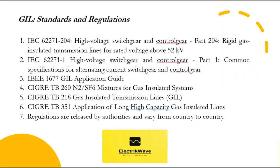The various standards and references followed for GIL include: IEC 62271-204 — High voltage switchgear and controlgear Part 204: Rigid gas insulated transmission lines for rated voltage above 52 kV; IEC 62271-1 — Common specifications for AC switchgear and controlgear; IEEE 1677 — GIL Application Guide; CIGRE TB 260 — N2 and SF6 mixtures for gas insulated systems; CIGRE TB 218 — Gas insulated transmission lines; CIGRE TB 351 — Application of long high capacity gas insulated lines. Regulations are released by authorities and vary from country to country.